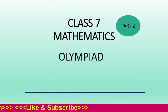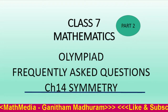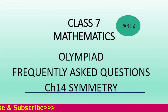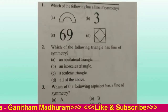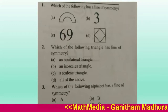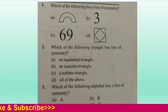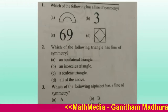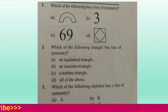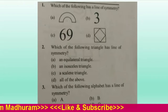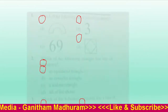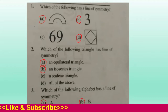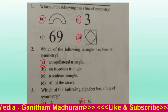Hello everyone. These are some MCQ questions which are frequently asked in Olympiad questions from Chapter 14, Symmetry. This section contains multiple choice questions. A, B, C, D are the options given, out of which one or more options are correct. Read the question carefully and answer it.